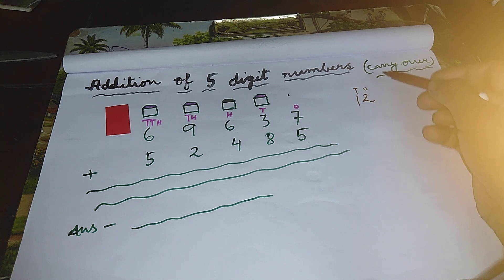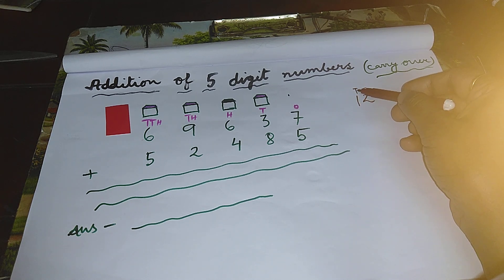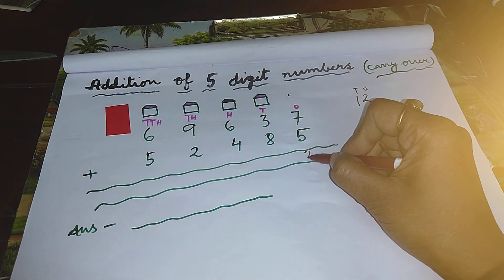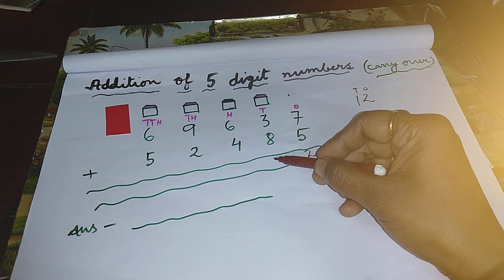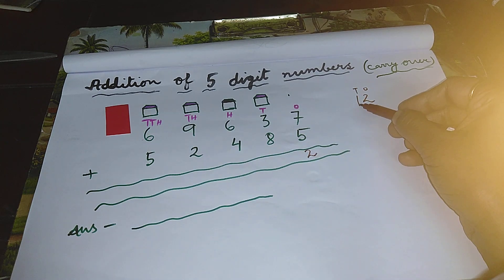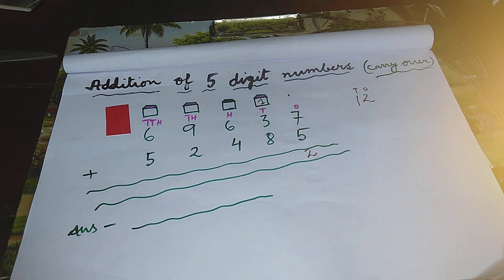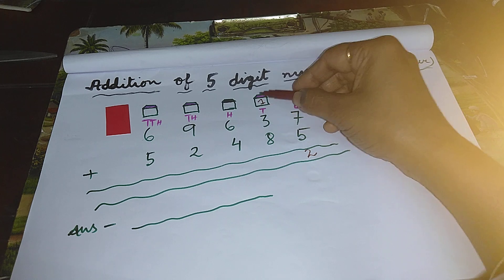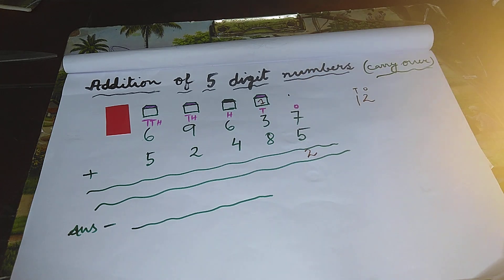Children, two belongs to one's place. One belongs to ten's place. So two will sit in the one's column. We will make a separate room for this one. One will sit over here. Now add all the digits that belong to ten's place.